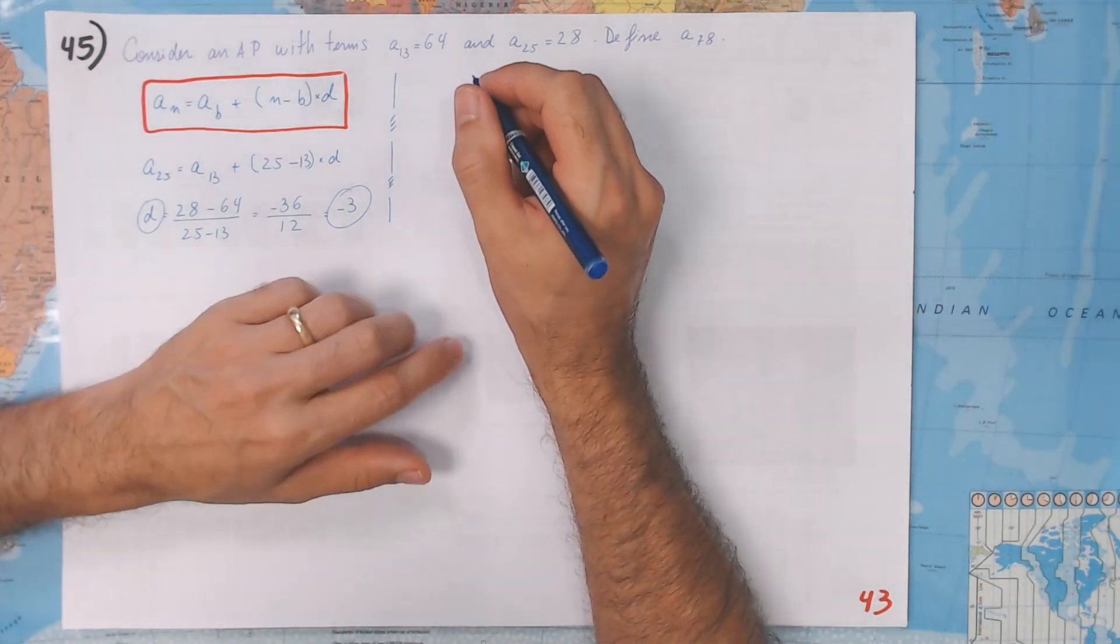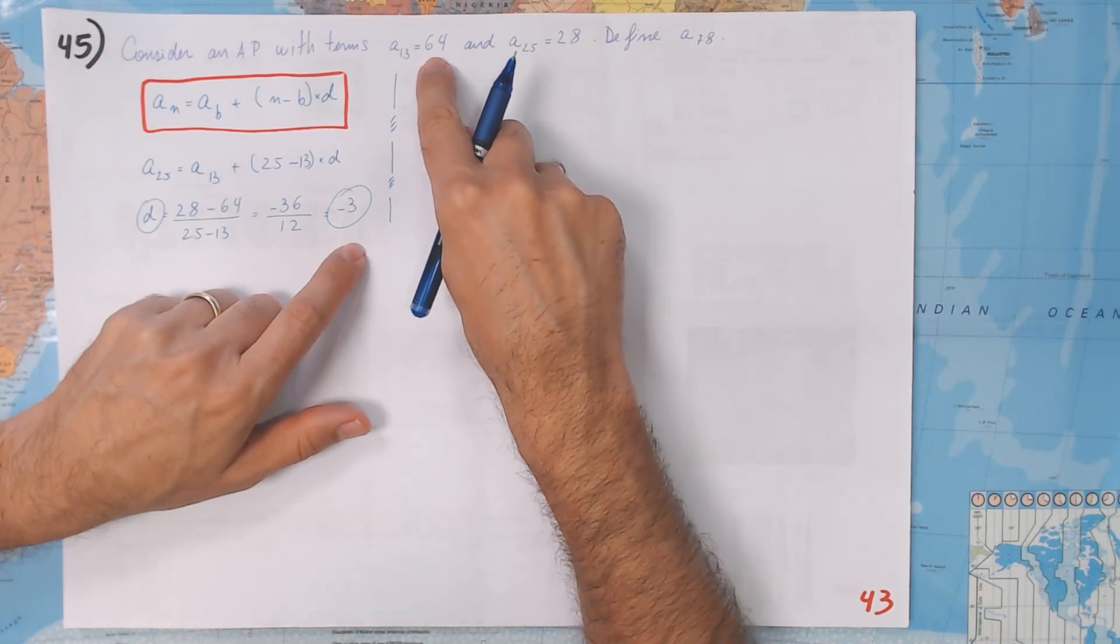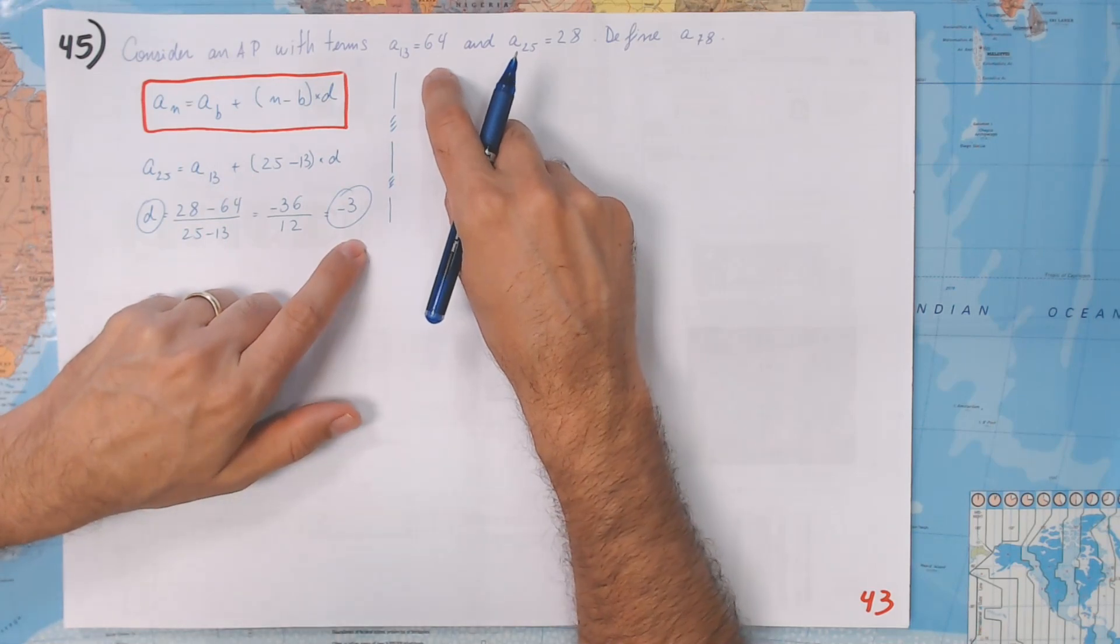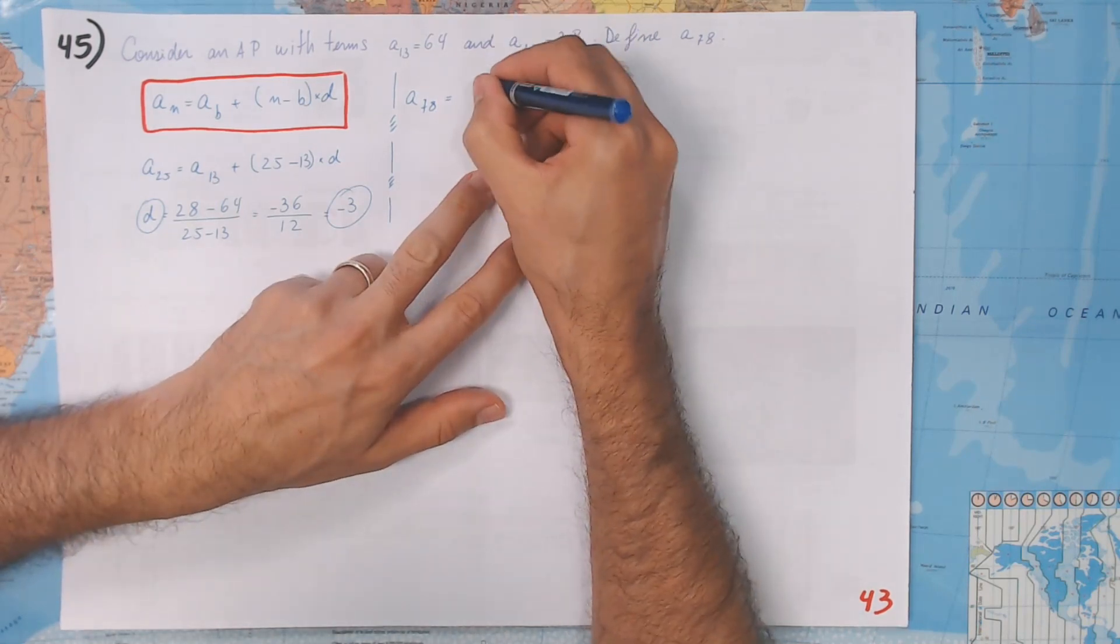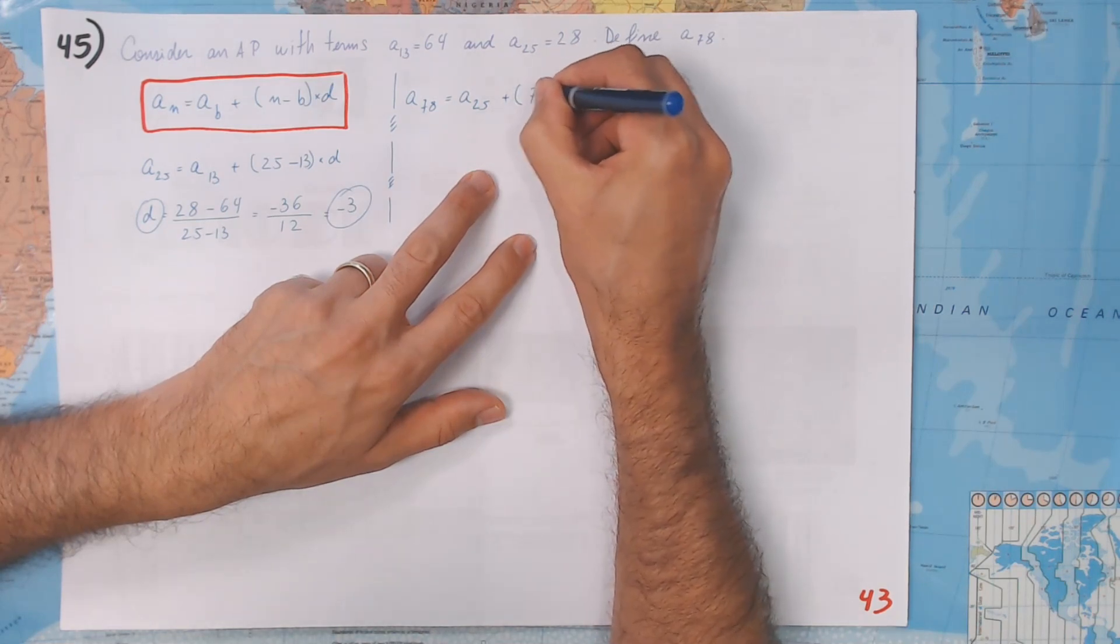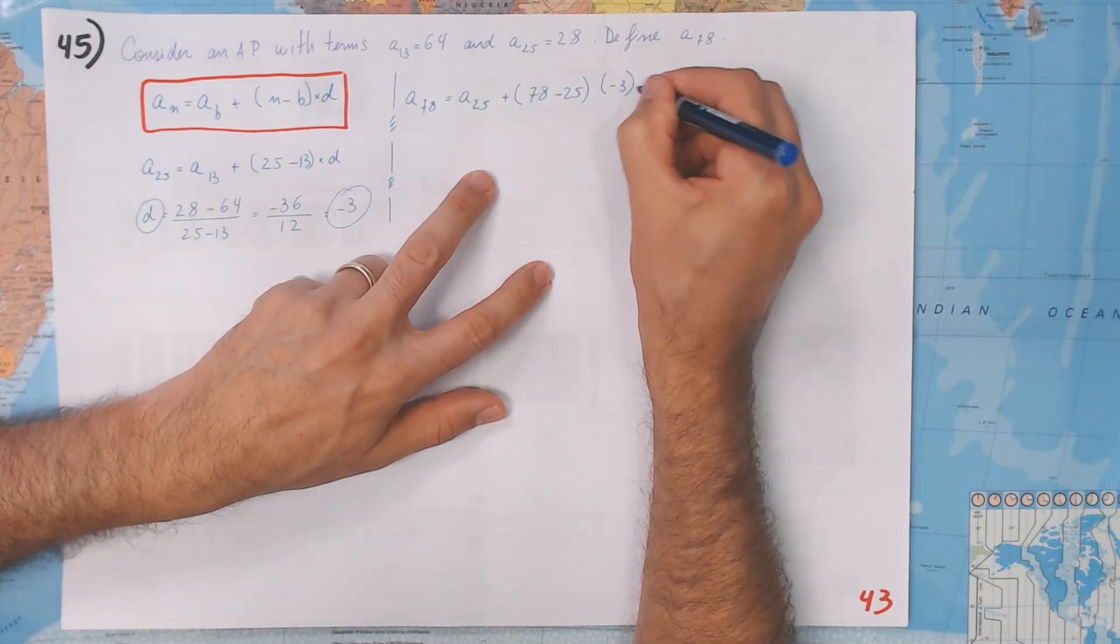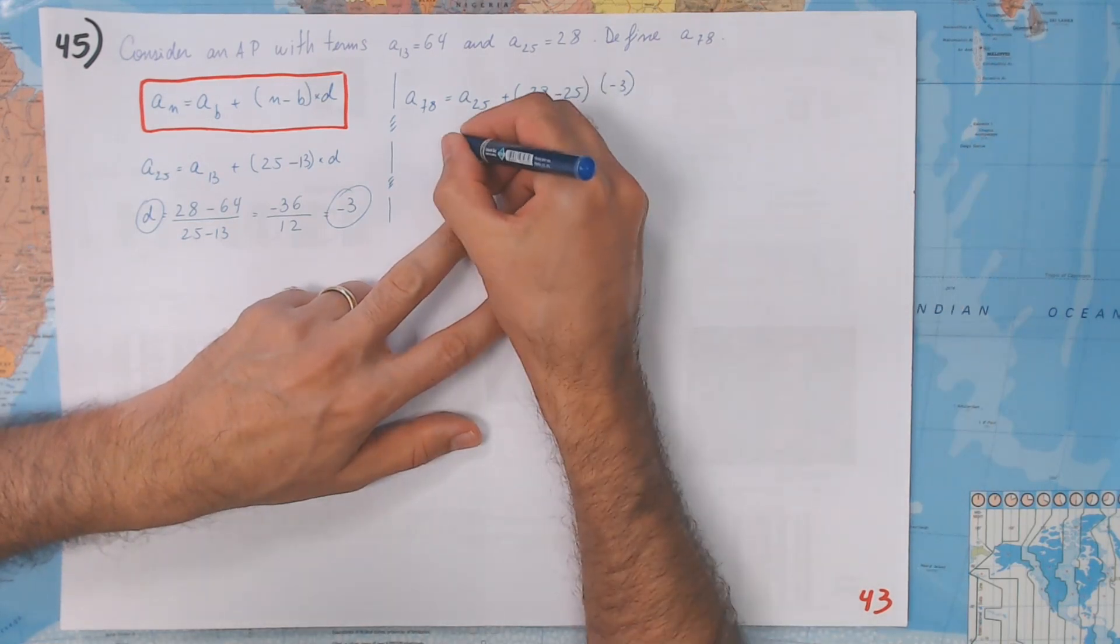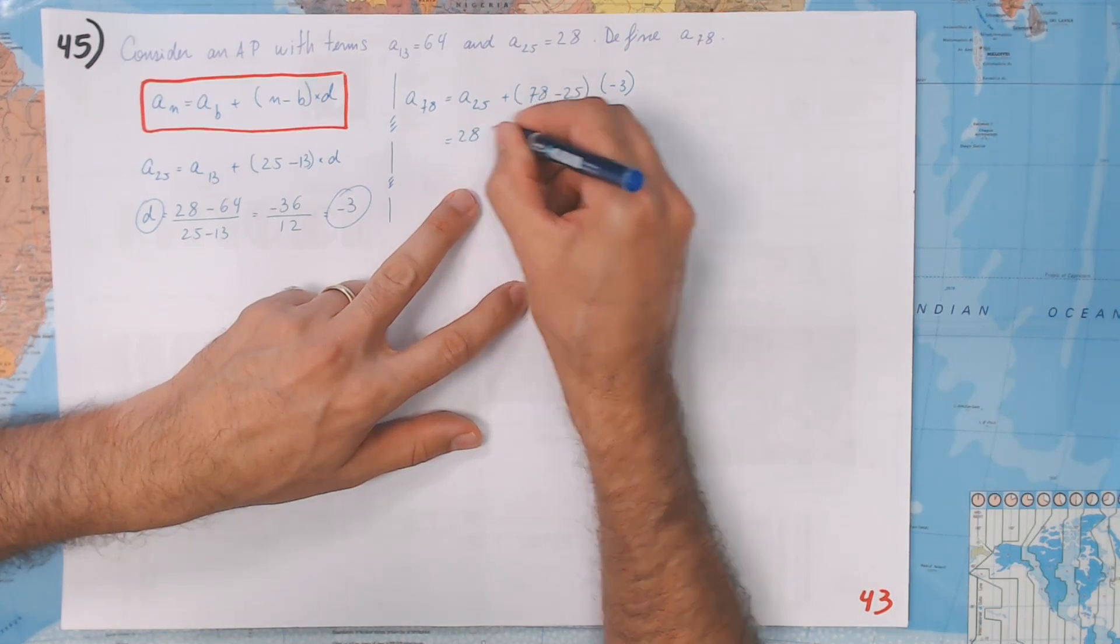Knowing D, and knowing any term on our sequence, we can know everybody. Now let's get a₇₈. It is going to be, I can choose for instance a₂₅ plus 78 minus 25 times minus 3. It is our common difference. If we just do the math, a₇₈ is going to be 28.